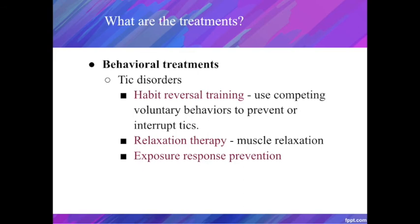Behavioral treatments for tics attempt to break the stress-release cycle in the patient. Habit reversal training teaches individuals to use competing behaviors to prevent or interrupt tics — for example, if a patient has eye blink tics, the patient will be asked to voluntarily blink slowly before the tic occurs. With relaxation therapy, the patient moves through a series of progressive muscle relaxation exercises whenever they feel an urge to tic. Exposure and response prevention teaches individuals to resist and tolerate the urges to tic by consciously suppressing them.